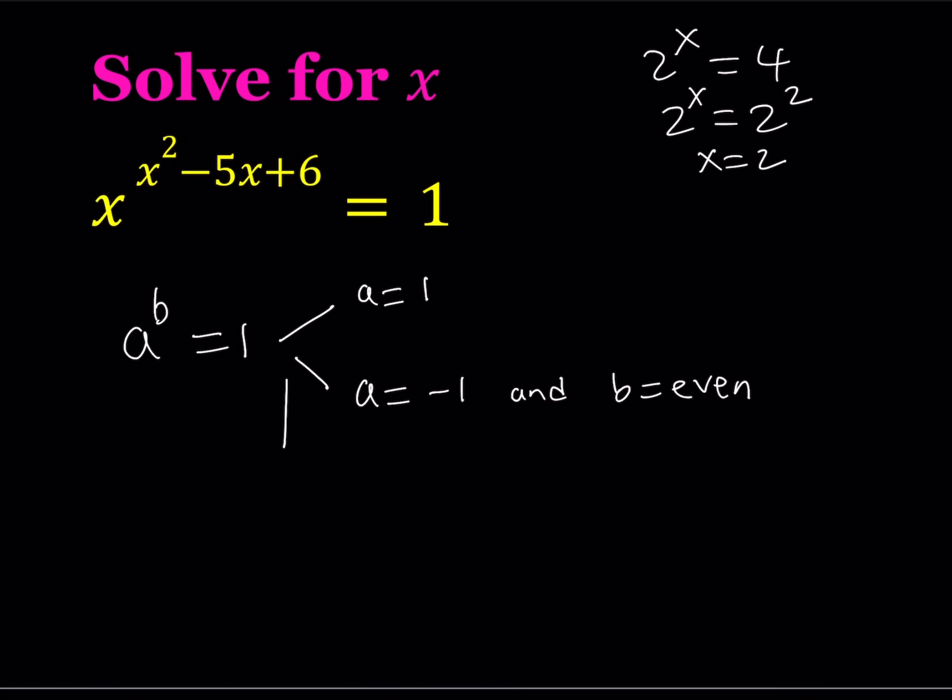And the last case we're going to be looking at is b is equal to 0 and a is not equal to 0 because we don't want to get into a situation where we have 0 to the power 0. So we're going to be looking at each of these cases separately and see if we can get solutions from here.